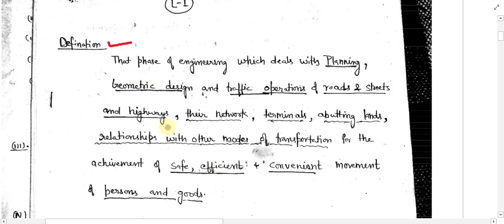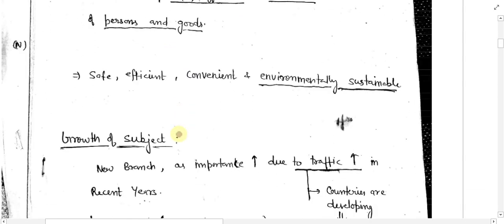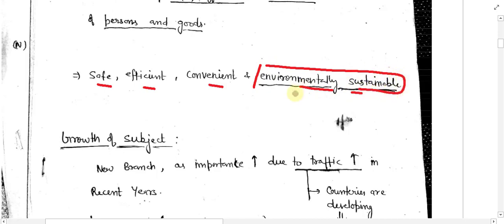The important thing in these notes is four words which you have to remember always. The first one is 'safe', the second is 'efficient', the third is 'convenient', and the fourth is 'environmentally sustainable'. This last term is very important from an ethical point of view.